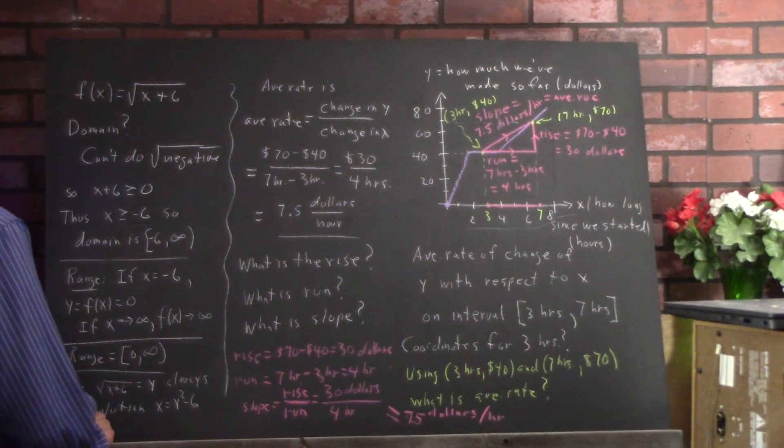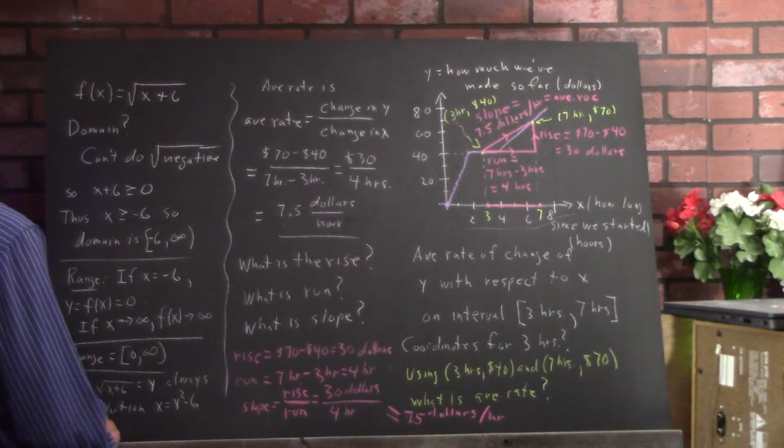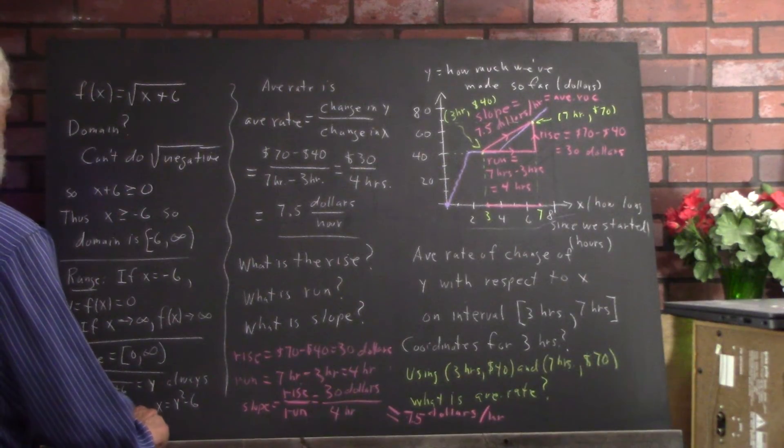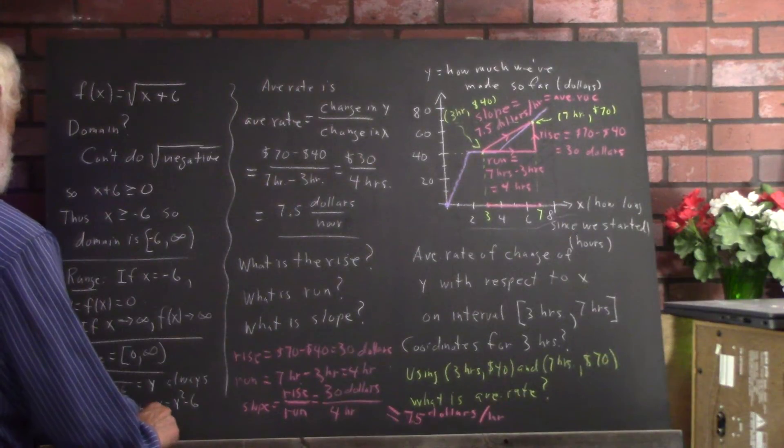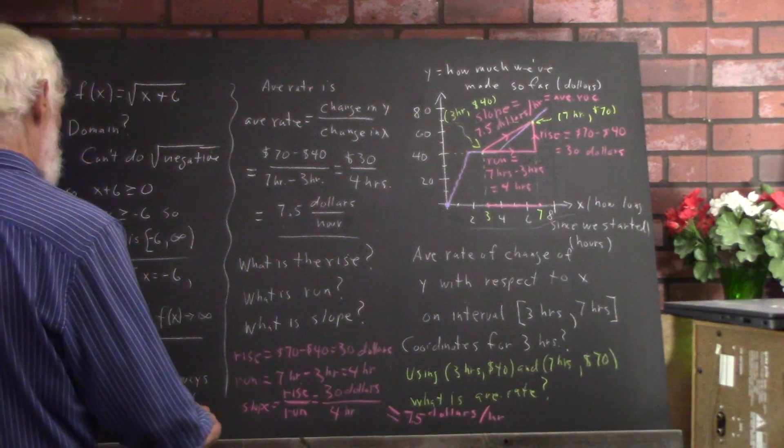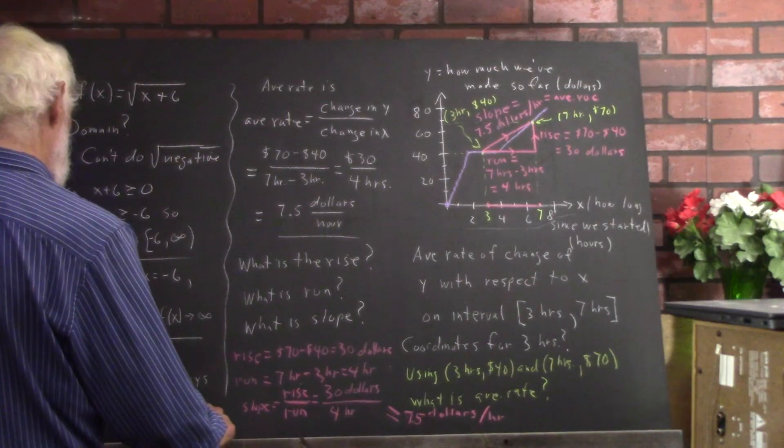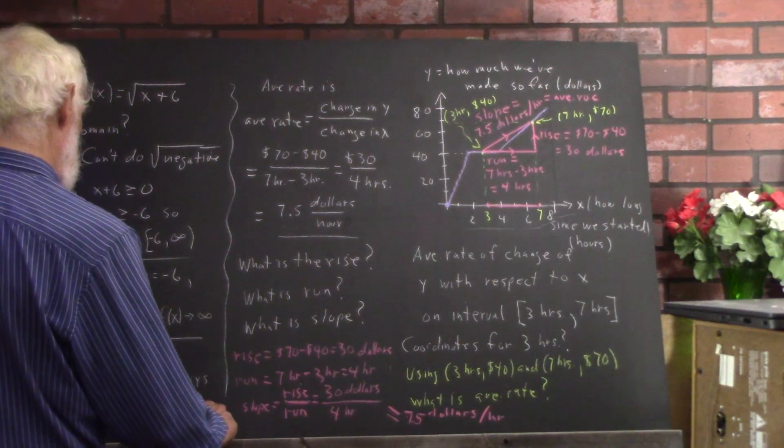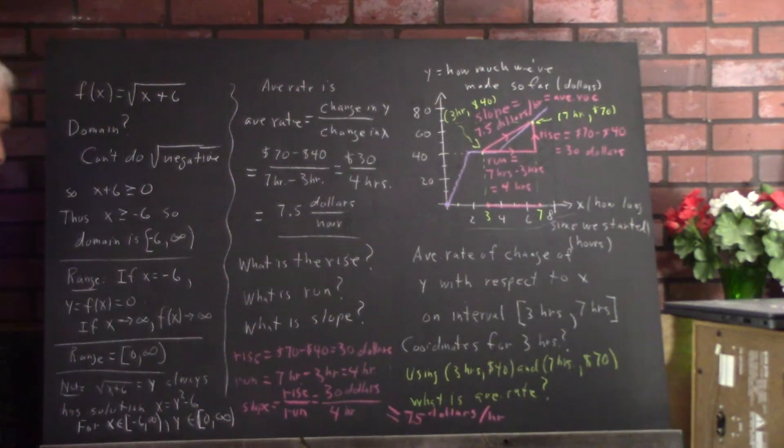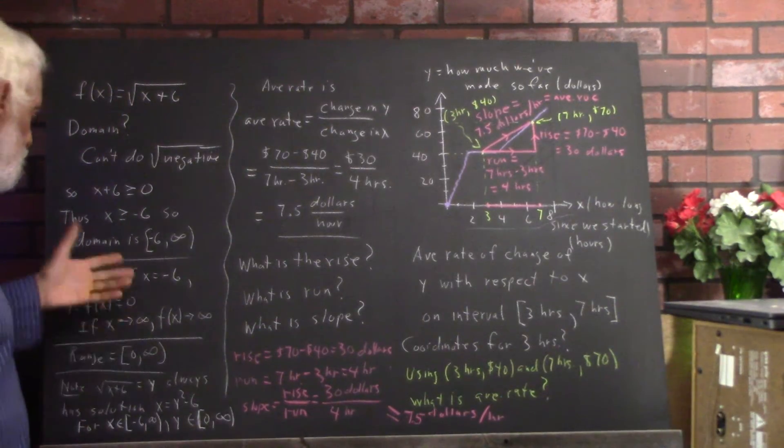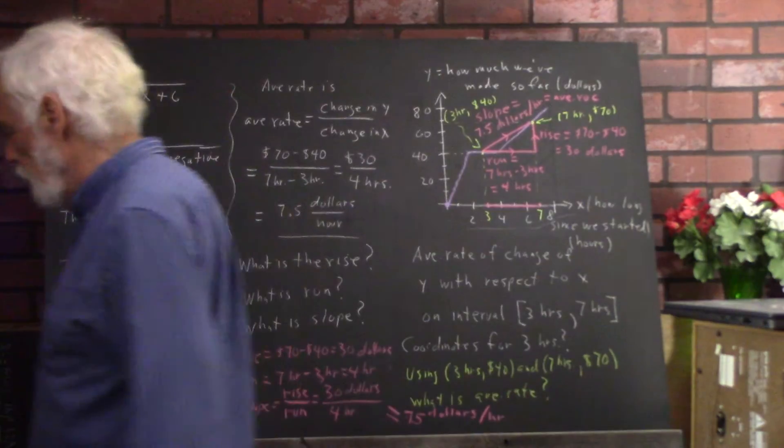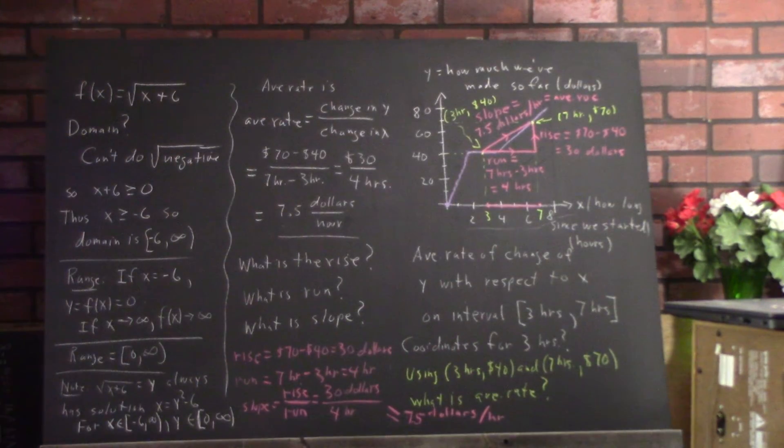Well, I don't have to say, for x in the interval negative 6 to infinity, y is in the interval, it should be a square brace bracket here, 0 infinity. So there's sort of analysis of range. I could improve that if I had a little bit of room on the board. I don't. So I'm going to leave it at that and let you take a look at the text.